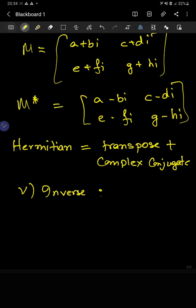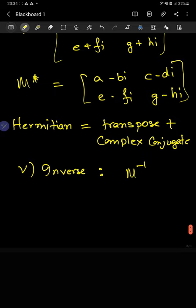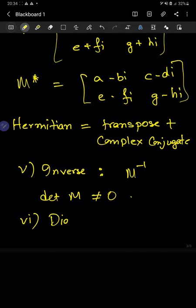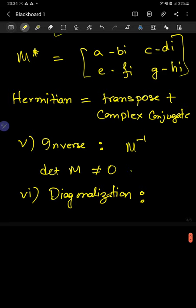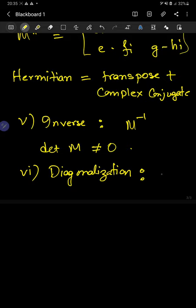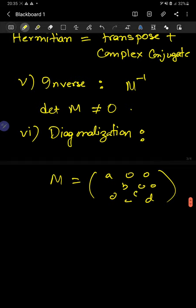We also have the inverse, which is M inverse. You can find it in various ways. Remember that a matrix is invertible if the determinant is non-zero; otherwise the matrix isn't invertible. Another important operation is diagonalization — I'll brief it now but we'll come back in the next lecture. Diagonalization is basically making a matrix diagonal, meaning you only have diagonal entries and all others are zero.